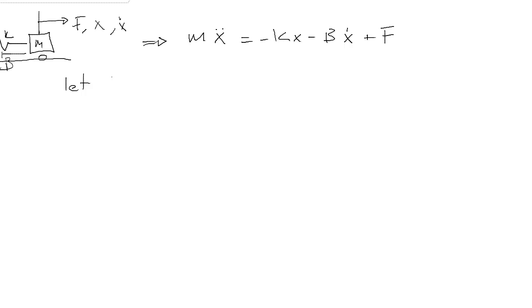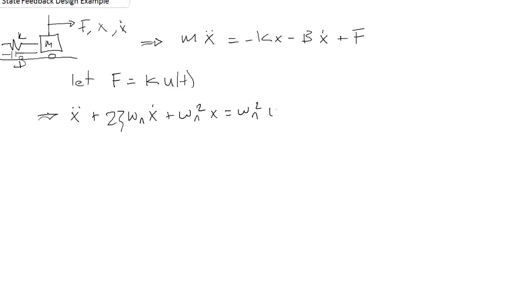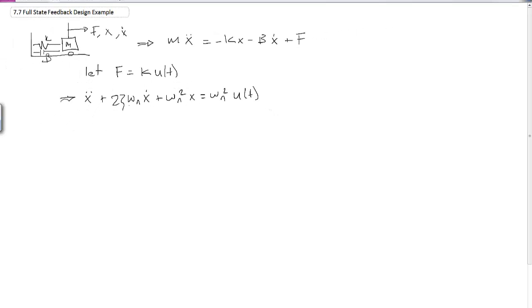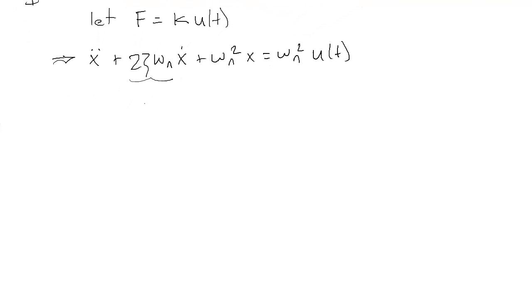We let f equal the spring coefficient times some displacement command. After all is said and done, we end up with x double dot plus 2 zeta omega n x dot plus omega n squared x equals omega n squared times u(t). This term is b over m and this term is k over m, natural frequency and damping ratio.